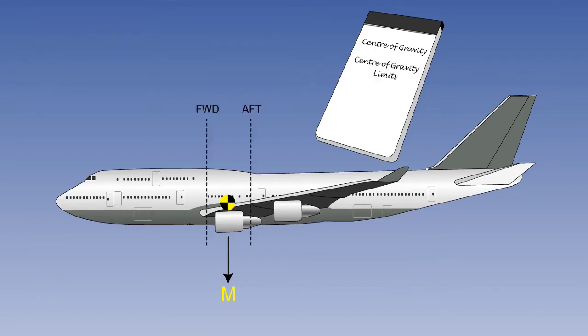The centre of gravity position will vary throughout the operation of the aeroplane due to the position of load, use of fuel, and movement of crew and passengers. It is vitally important that it remains within the boundaries set by the manufacturer. The limited range of centre of gravity can be found in the aeroplane flight manual. We will deal with movement of centre of gravity in detail later on in the course.